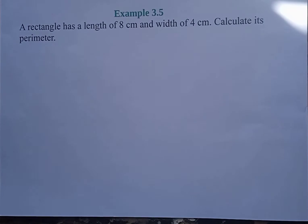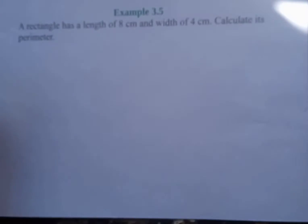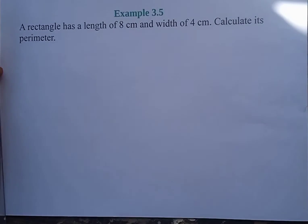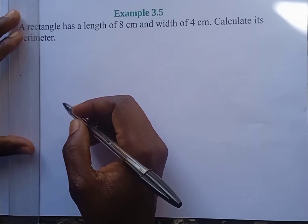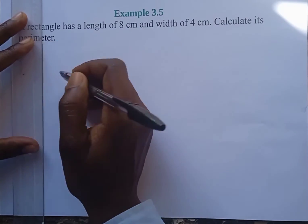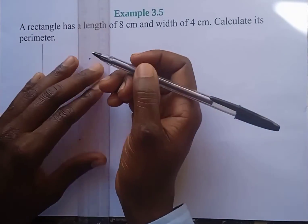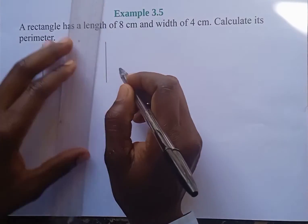Hello and welcome. A rectangle has a length of 8 centimeters and a width of 4 centimeters. Calculate its perimeter. So we first draw the rectangle.